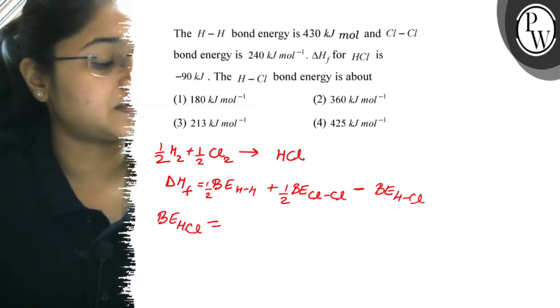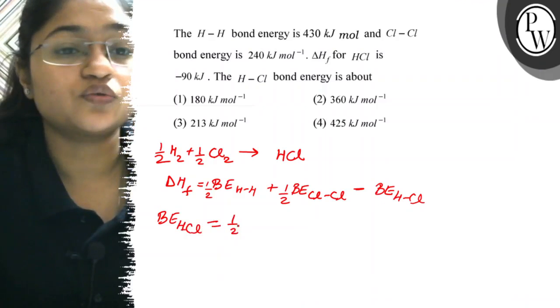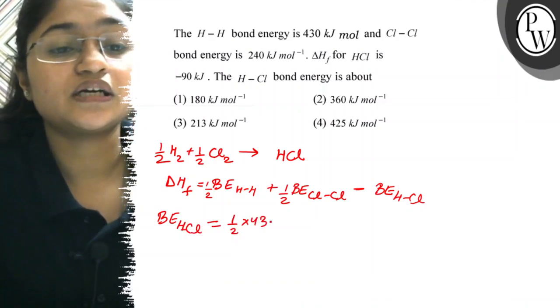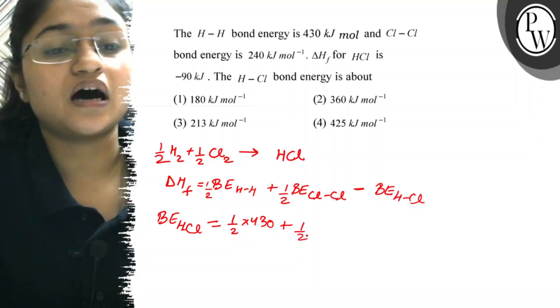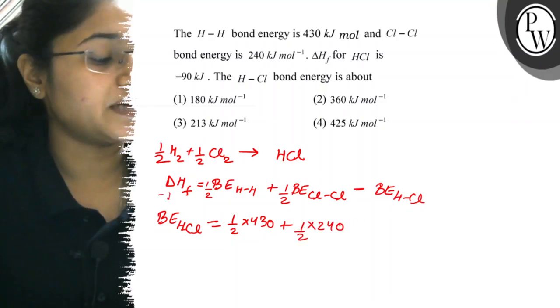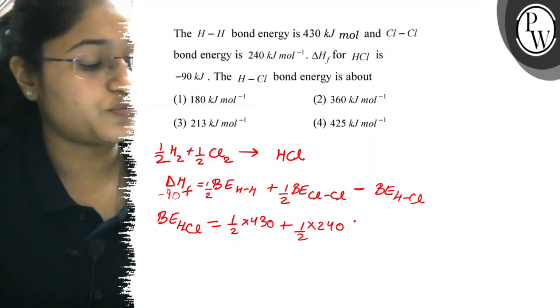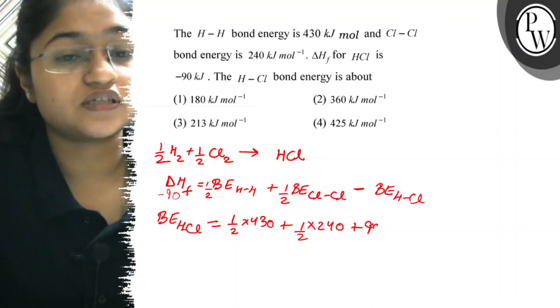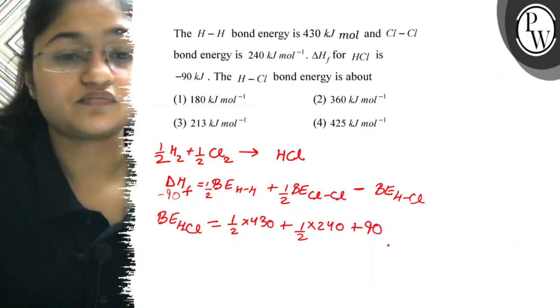We can write here, half into 430 plus half into 240. Here, this was minus 90. On the opposite side, plus 90.